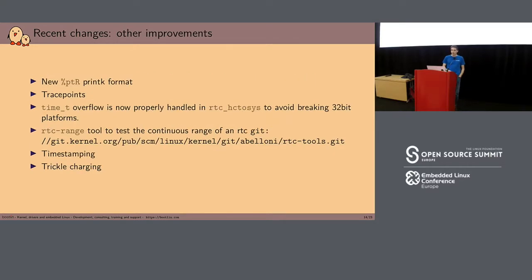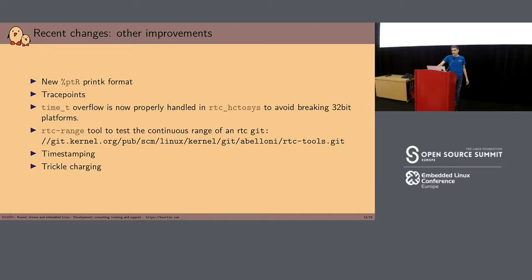There are also other improvements. We have a new printk format, %pR — you pass an struct rtc_tm, which is a broken-out date and time, and it prints all the members of the structure. That's really useful instead of doing individual %d for each field. We also have trace points at interesting functions — when you set the time, read the time, or handle an alarm — allowing you to debug your driver without adding debug prints, which is really nice.